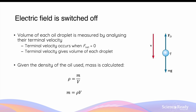Milliken did this by switching off the electric field. When the electric field is absent, the oil droplet will be subject to the weight force and also air resistance going upwards. When the magnitude of the weight force equals the magnitude of the drag force or air resistance, each oil droplet will be falling at what we call a terminal velocity. This is when the oil droplet is falling at the greatest velocity possible and at a constant speed. The terminal velocity, when measured, gives information on the volume of each droplet. Given that the density of the oil is known to Milliken, the mass of each droplet is calculated by multiplying the density of the oil by the volume, which can be calculated using the terminal velocity of each droplet. Afterwards, the mass of the droplet can then be used to calculate the charge of the oil droplet as we saw previously.